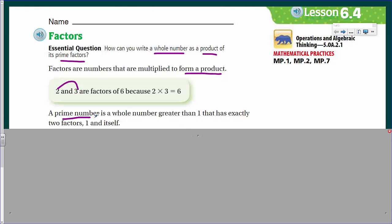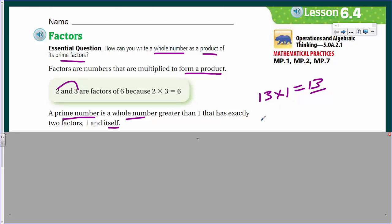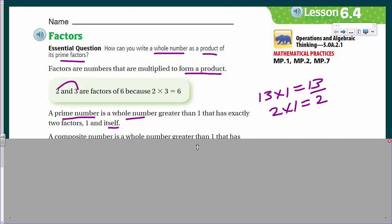Now, a prime number, however, it's a whole number greater than 1 that has exactly 2 factors. 1 and itself. Alright, itself being I can choose any number. 13. And then I multiply it with 1. And I get 13. This is exactly 2 factors. There are no more factors that you could multiply to get 13. An impossibility, my friends. Therefore, we say that 13 is a prime number. Same with 2. 2 times 1, 2. I can't think of any other factors that you could multiply to get 2. There are none. Therefore, we say that 2 is prime.